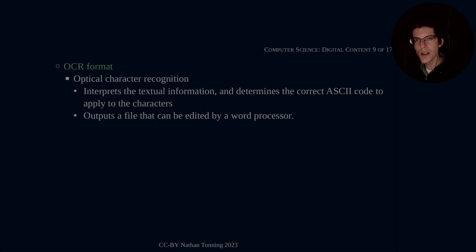But if you want to be able to interact with the textual data of the file itself, then you have to scan the document using an OCR, OCR format. And this is optical character recognition. So this is software that is reading the scan, looking at the contrast of black and white, and it has some intelligence built into it in that it can interpret the textual information and determine the correct ASCII code to apply to the characters. And then it outputs a file that can be edited by a word processor. So that could be a .txt file. It could be outputting directly to a .odt file, which would be your LibreOffice or a .docx file. So that is your OCR format versus your graphics format.